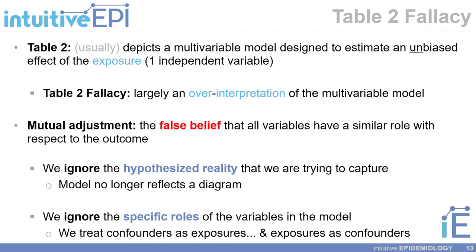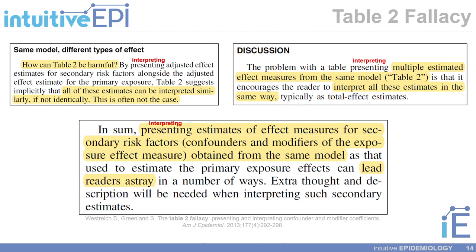In the case of the Table 2 fallacy, we are ignoring the hypothesized reality that we are trying to capture, and our model is no longer reflecting a conceptual framework or a diagram. We are ignoring the specific roles of the variables in our model — for example, treating confounders as exposures and exposures as confounders. Westerreich and Greenland talk about the Table 2 fallacy being harmful because it suggests that all the estimates in the multivariable model can be interpreted in the same way, and they say this is not the case. The Table 2 fallacy can lead readers astray in a number of ways.